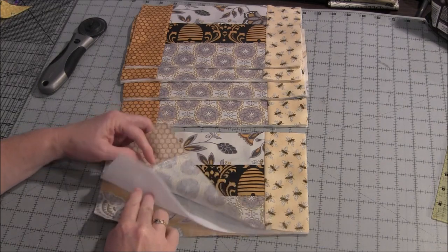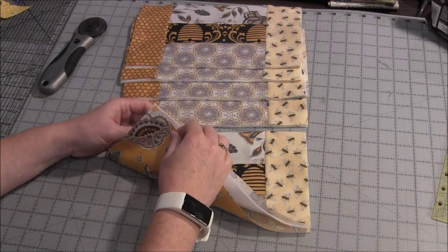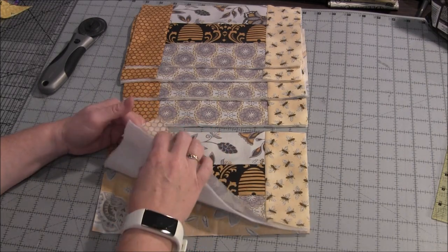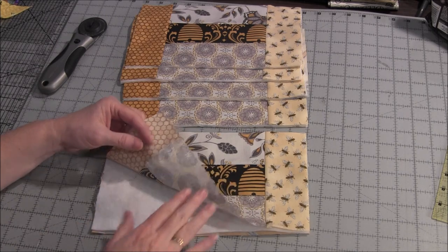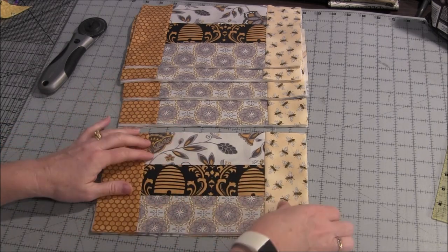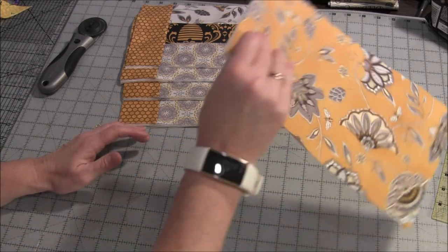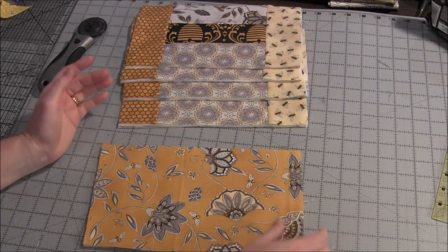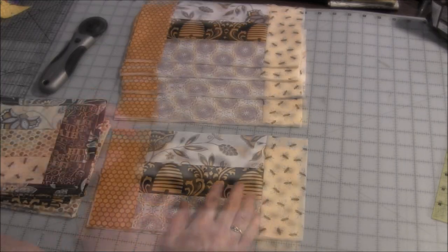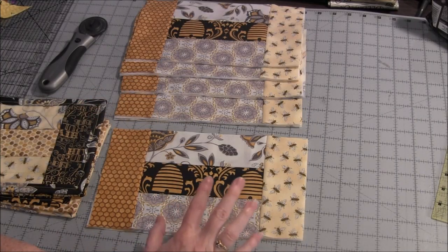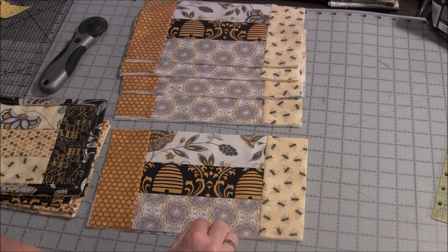So here I have my backing fabric facing down, my batting fabric on top, and then my mug rug top fabric layered up right side up. So you can see here's the back.